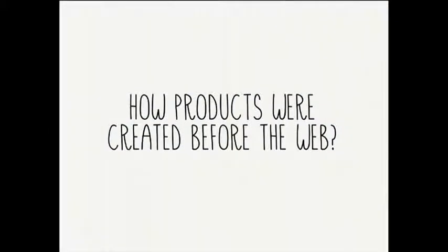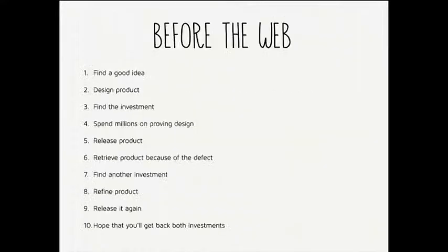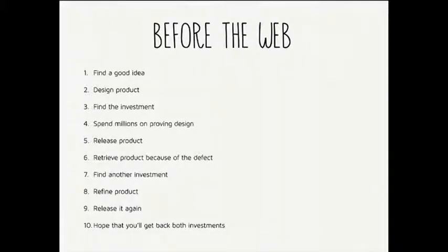If we look at how products were created before the web, it was something like this: find a good idea, design the product, find investment, spend millions proving the design works, release the product, find a bug, retrieve the product because of the defect, find more investment to fix it and release again, then refine and hope you get both investments back. This is the classical way of releasing a product — I'm exaggerating, but it was close to this.